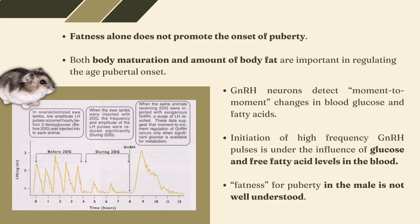It should be highlighted that fatness alone does not stimulate the onset of puberty. Females can be obese at a very young age and not be pubertal. Both body maturation and the amount of body fat are essential in regulating the age of pubertal onset. Gonadotropin-releasing hormone neurons detect moment-to-moment changes in blood glucose and fatty acids. Evidence indicates that the initiation of high-frequency GnRH pulses is under the impact of glucose and free fatty acid levels in the blood.